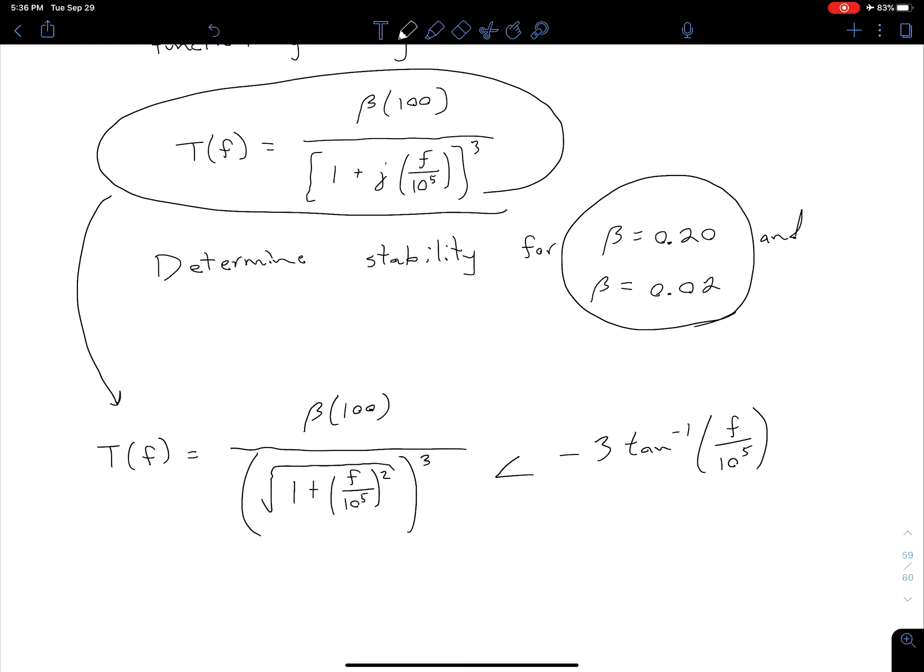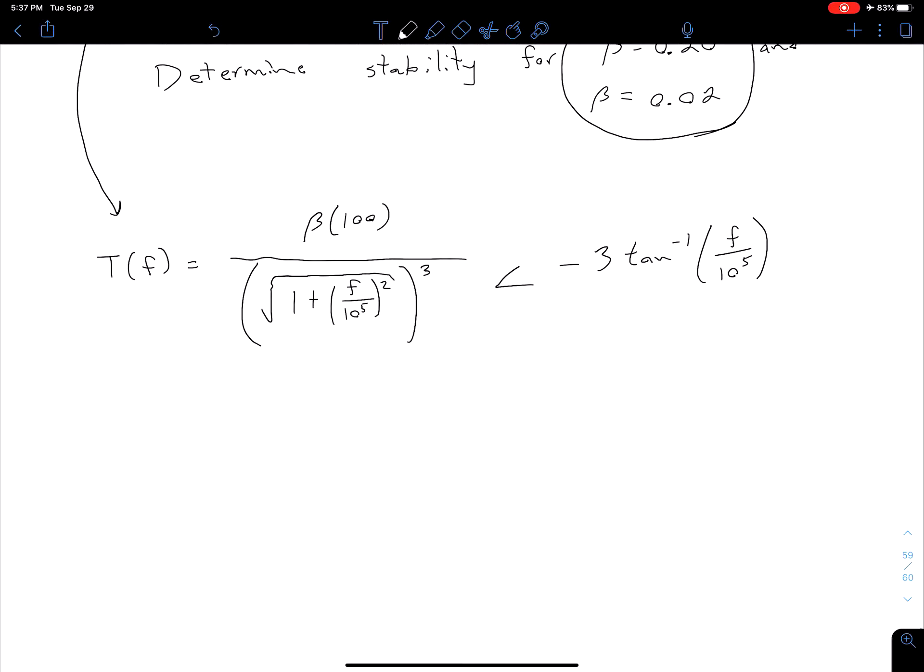Okay so now what we want to do is use our phase information. Remember we're saying our system is stable or unstable by determining the value of the magnitude when the phase is equal to negative 180 degrees. So let's figure out the frequency where our phase is equal to negative 180 degrees.